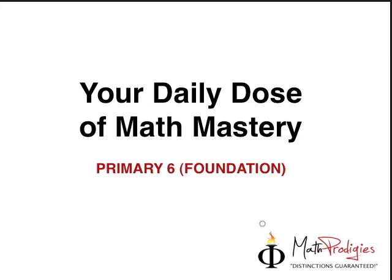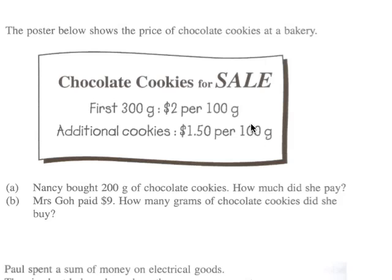So the first question, as we can see—by the way, I want to make sure that you have your assessment paper next to you so that it's easy to refer to. The poster below shows the price of chocolate cookies at a bakery. Chocolate cookies for sale is the first 300 grams. Again, what does that mean? That means for the first 300 grams,